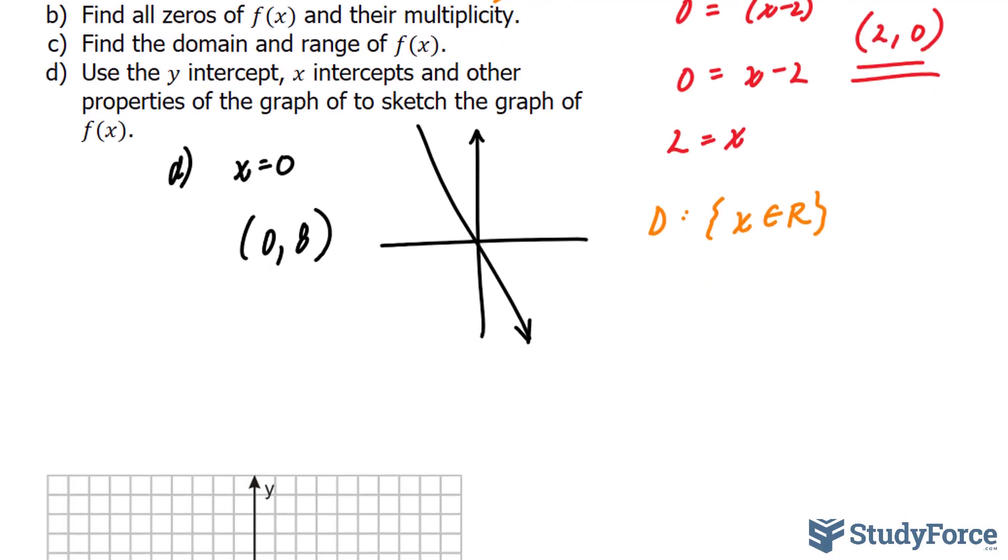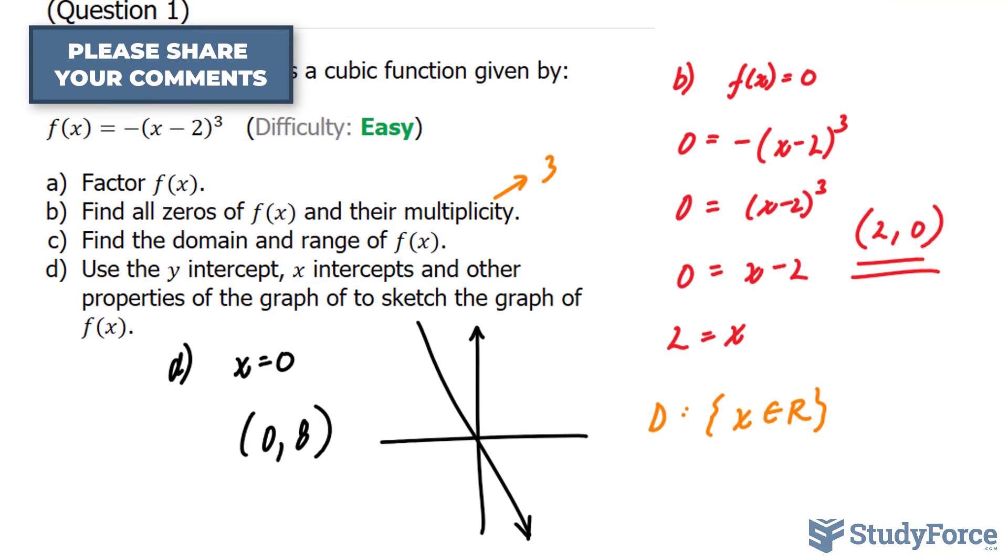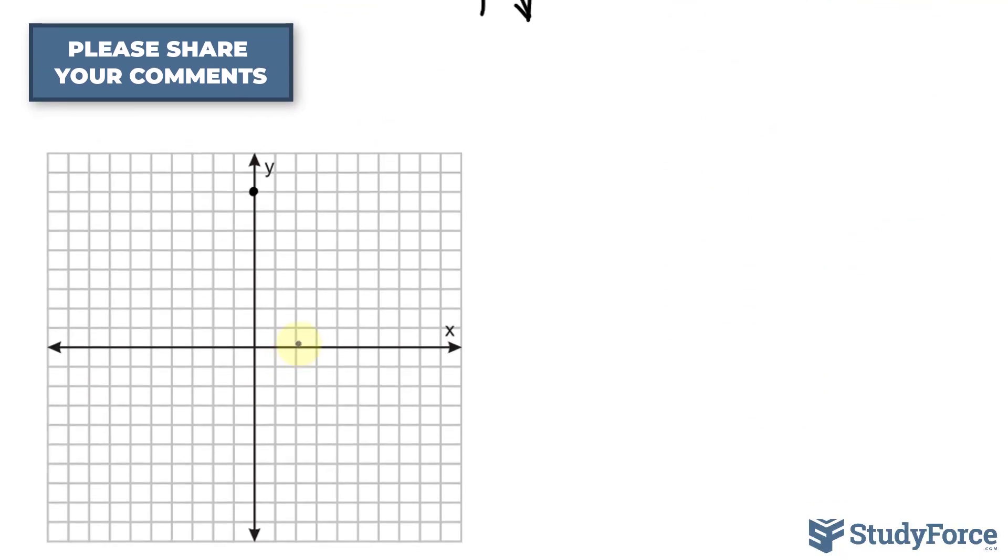Let's place the points that we found, namely (0, 8) - 1, 2, 3, 4, 5, 6, 7, 8 up here - and our only root (2, 0) along the x-axis. So we know that our curve needs to flow through this point and that point.